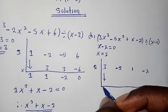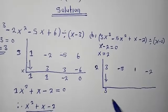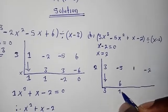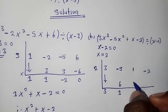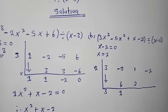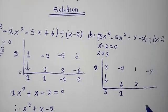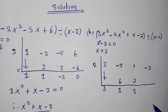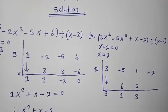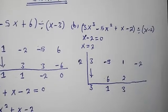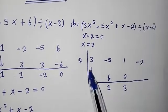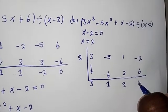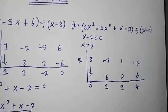Drop down 3. Then 2 multiplied by 3 gives positive 6. Negative 5 plus 6 gives 1. Then 2 multiplied by 1 gives 2, and adding gives 3. Then 2 multiplied by 3 gives 6, and adding negative 2 gives 4.